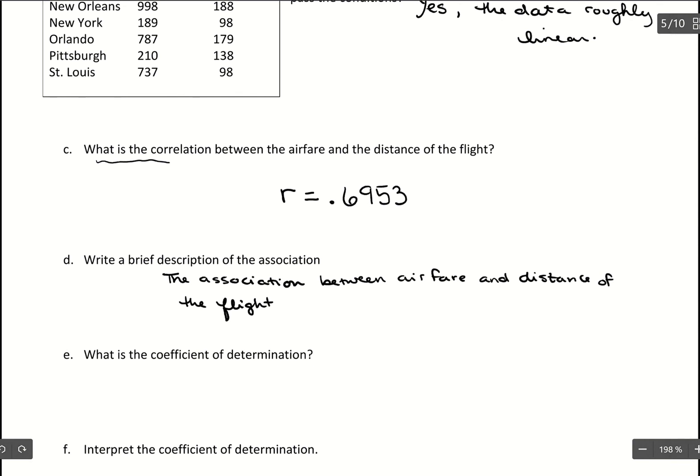So the association between airfare and distance of the flight is positive and moderate strength. So that's how we get our correlation and then use that to describe the association.